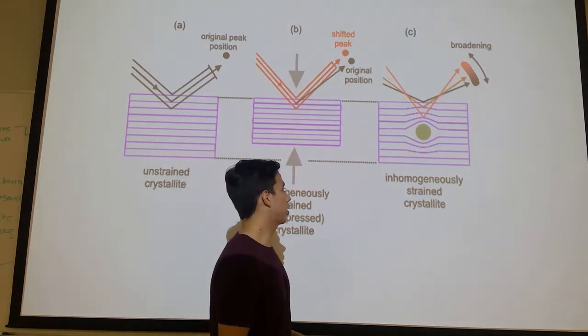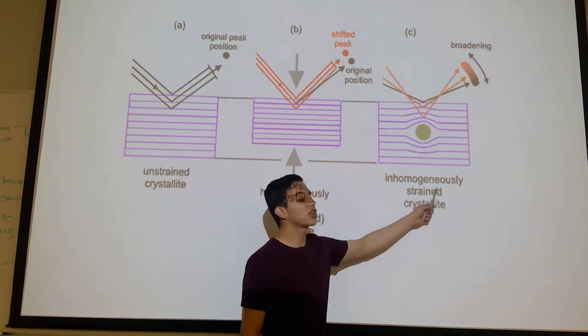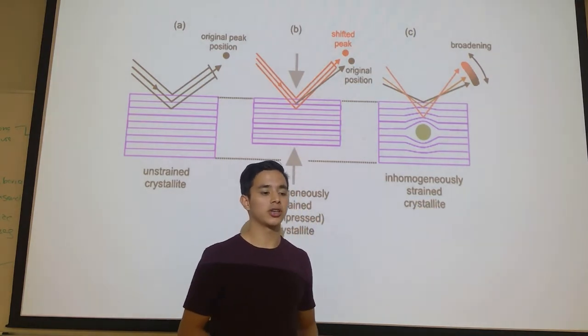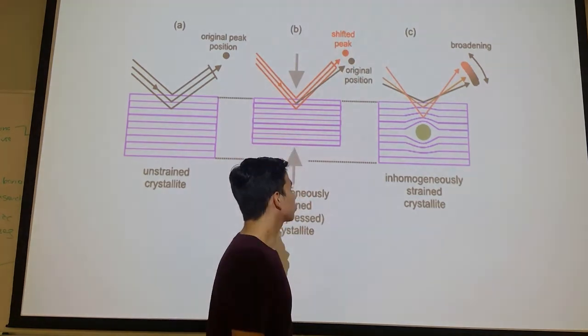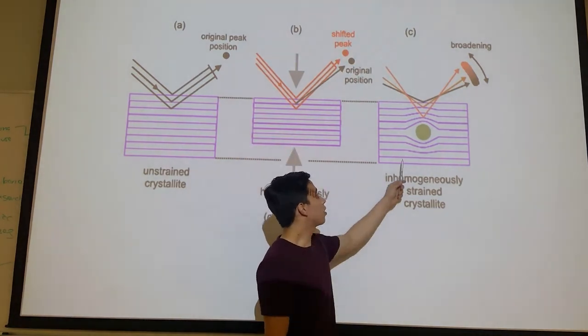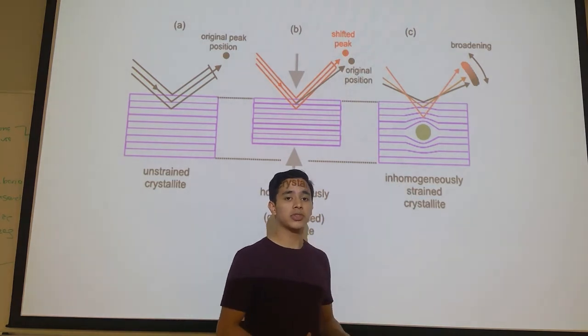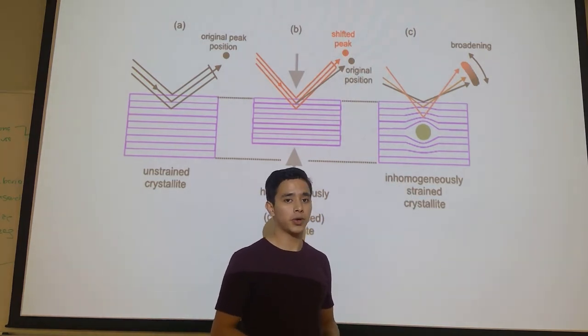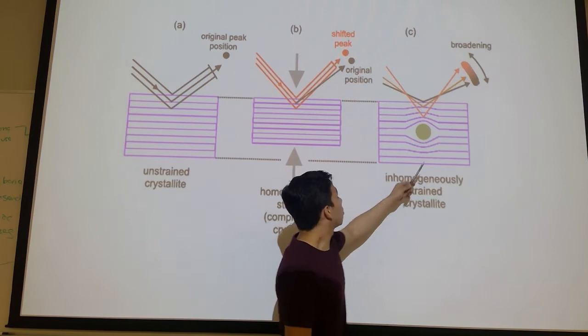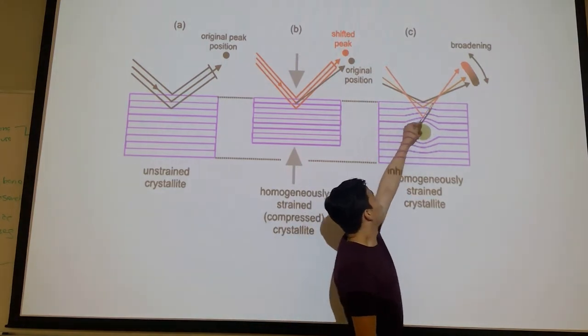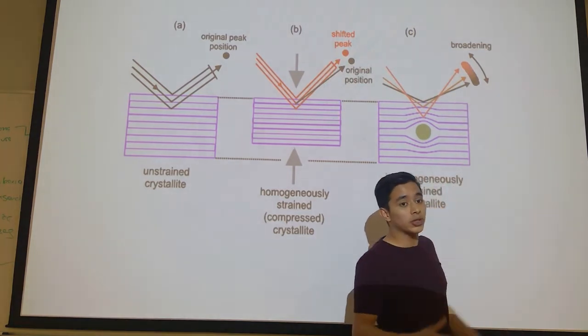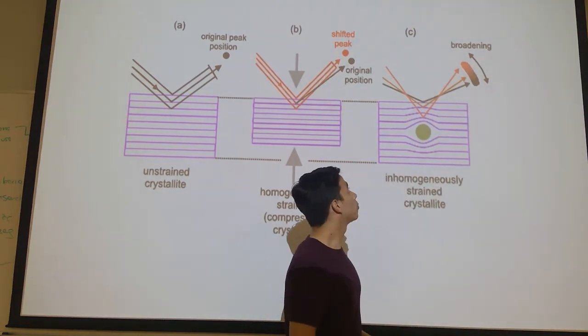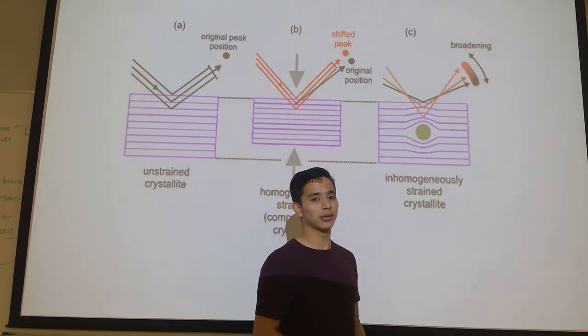The second type of strain is non-uniform strain, or it is often called non-linear strain. And what happens here is that every crystallite of the solid receives a different amount of strain, so a variation of the peak will occur, and the resulting effect will be a broadening of the intensity peak.